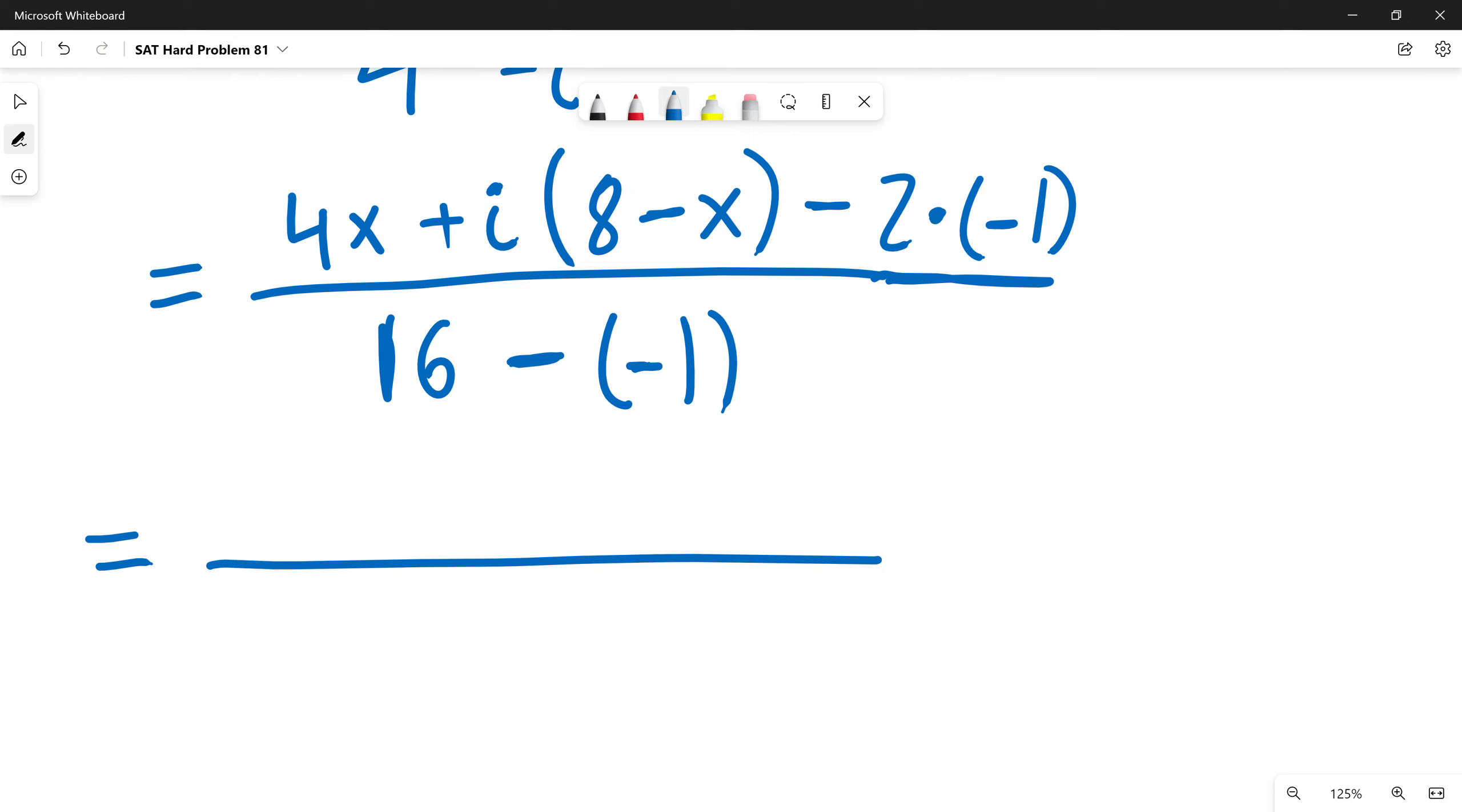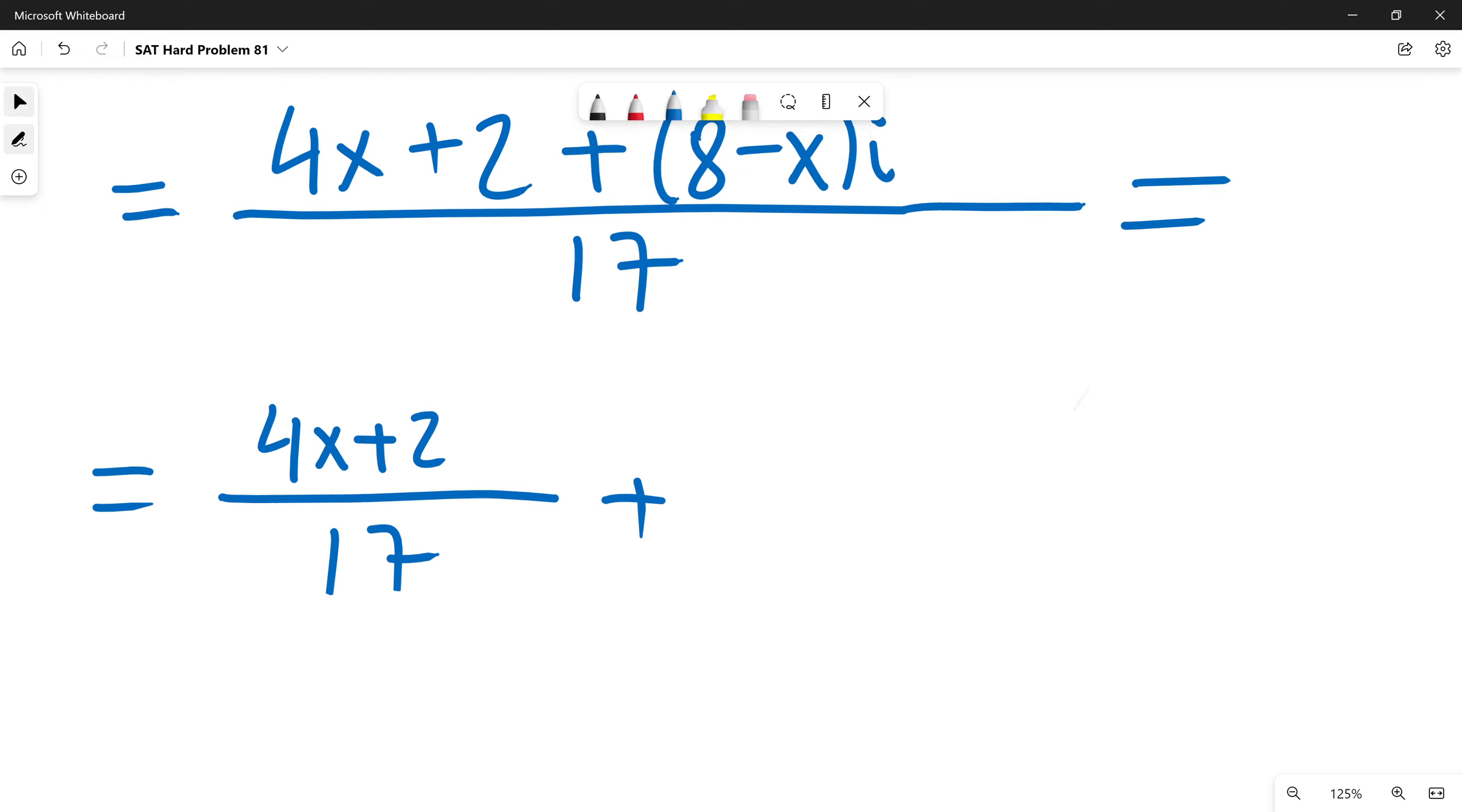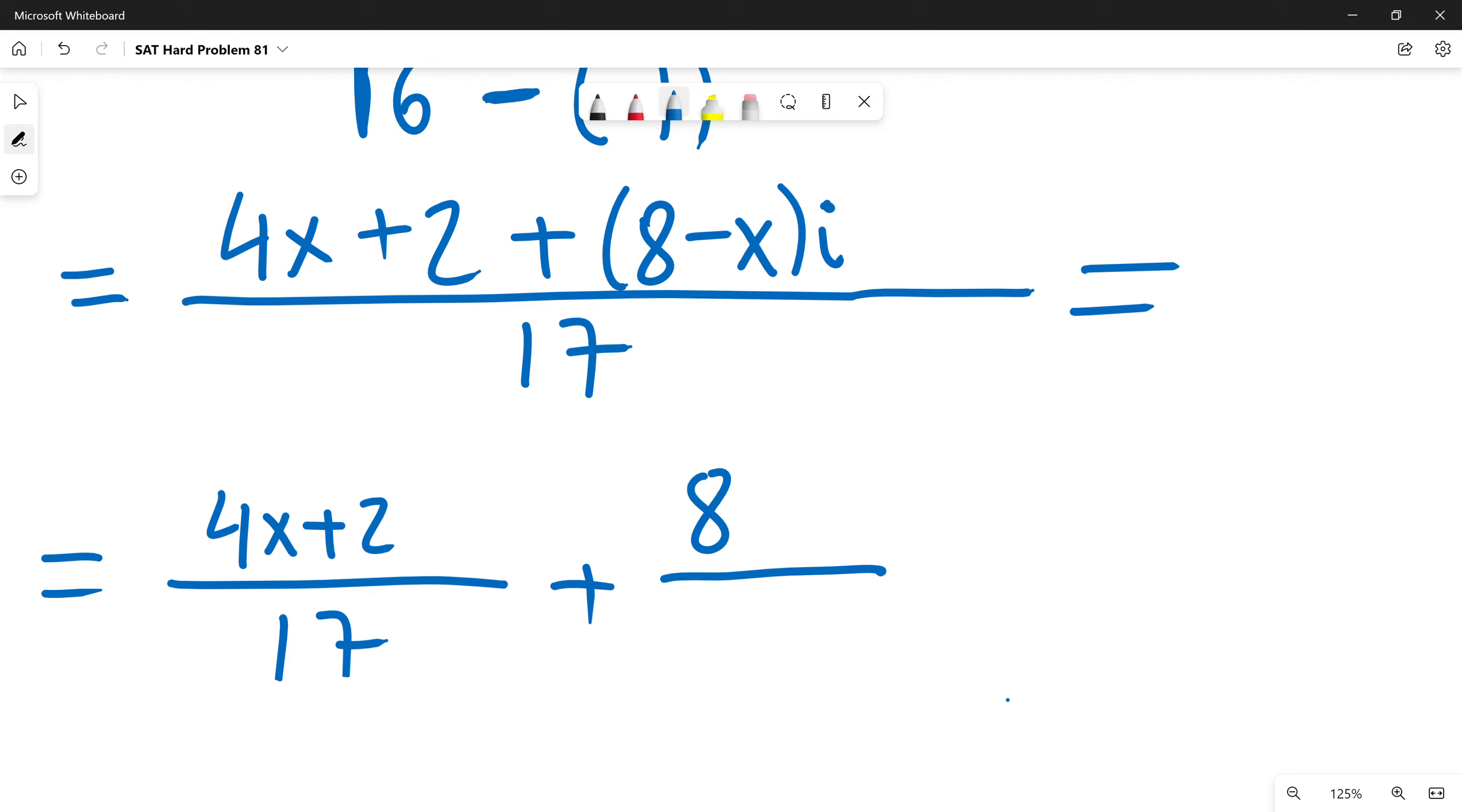Then, to simplify it more. The real part will be 4x here and minus 2 times by minus 1 will be just plus 2 plus 8 minus x times i. 16 minus minus 1 will be just 17. So, this number will be equal to real part will be 4x plus 2 divided by 17 plus imaginary part 8 minus x divided by 17 times i.